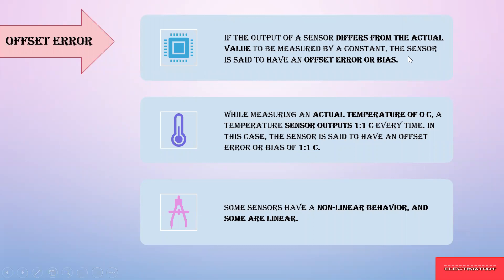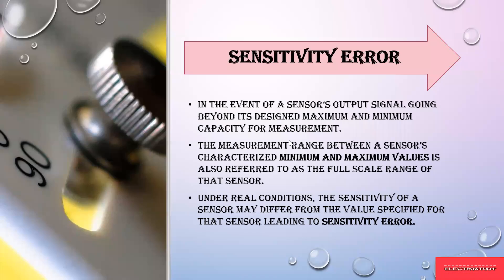Next is offset error. Offset error occurs when there is some difference from the actual value in whatever output you get from the sensor. For example, if the actual temperature is 0 degree Celsius but the temperature sensor gives an output of 1.1 degree Celsius every time you measure, the sensor is said to have an offset error. Some sensors produce non-linear behavior — for example, measuring 1.1 one time and 1.2 another time. Linear offset means the error remains constant with small changes. This is known as offset error.